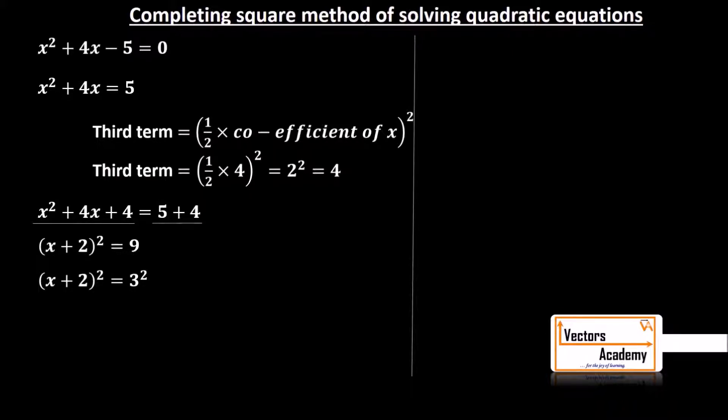Now we can see there is square on both sides of the equation. So what I can do is I can take square root. So taking square root on both sides, the square will get cancelled. I will be left with x + 2 = ±3.